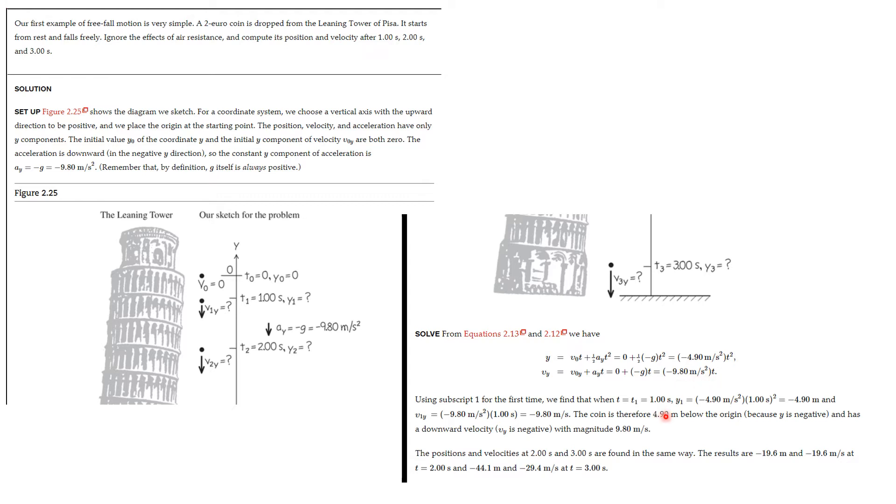And the velocity then is going to be, the initial one is zero, so it's just going to be the acceleration times the time. So we'll plug in one, two, and three in there, and we will find that the results are minus 4.9 meters and minus 9.8 meters per second at t equal 1, minus 19.6 meters and minus 19.6 meters per second at t equal 2, and it's minus 44.1 and minus 29.4 meters per second at t equal 3.